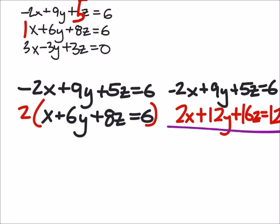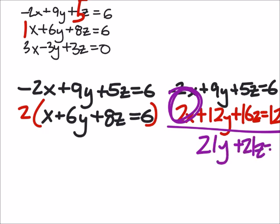Alright, now when I add these two together, I've eliminated the x's. And we've got 21y plus 21z equals 18. And this equation will be key in solving this system right here.